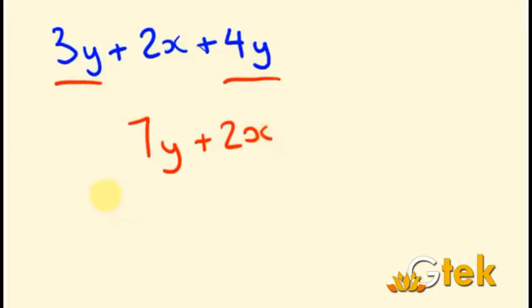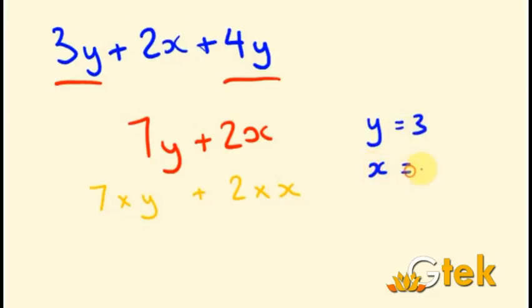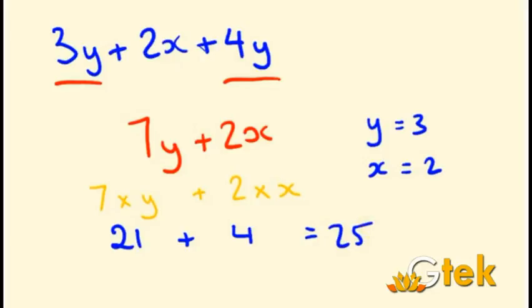We will expand this further by assigning values. That is 7 times Y and 2 times X. Consider Y equals 3 and X equals 2. Substituting into the expression: 7 into 3 is 21, plus 2 into 2 is 4, giving a total of 25.